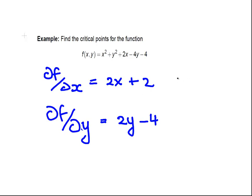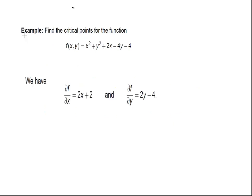To find the critical points, we have to let both of these equal to 0. So 2x + 2 = 0. You might have figured now, it's a pretty easy one in this case.